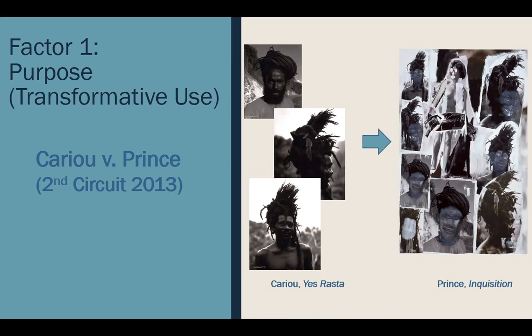Courts also consider under the first factor whether the work is being used for a commercial purpose or non-profit educational purposes. In this case, there wasn't any real question that this was being used commercially. But because the uses were so highly transformative, the court didn't put as much weight on the fact that Prince was selling these works for commercial purposes. Under the second factor — nature of the material — there wasn't any dispute that Cariou's photographs were creative works, but again, the court didn't give as much weight to this factor because the use was highly transformative.